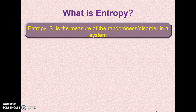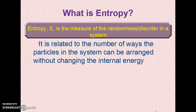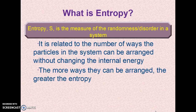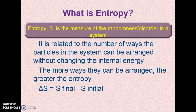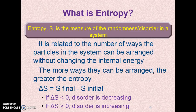What is entropy? Entropy, symbolized with a capital S, is the measure of the randomness or disorder in a system. It's related to the number of ways the particles in a system can be arranged without changing the internal energy — the more ways they can be arranged, the greater the entropy. Delta S for a change is S final minus S initial, always products minus reactants. If delta S is less than zero, disorder is decreasing left to right; if delta S is greater than zero, disorder is increasing left to right.